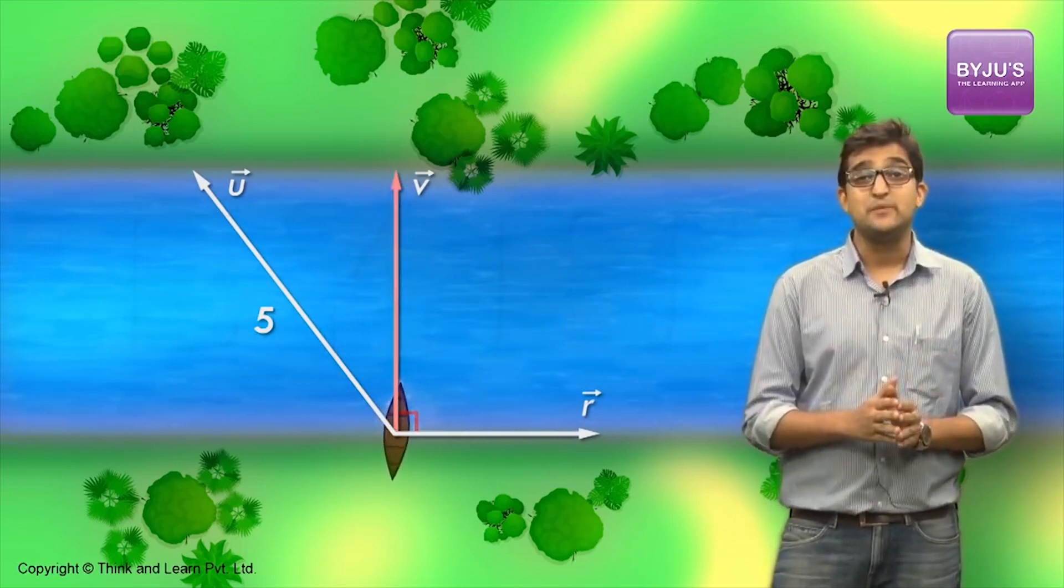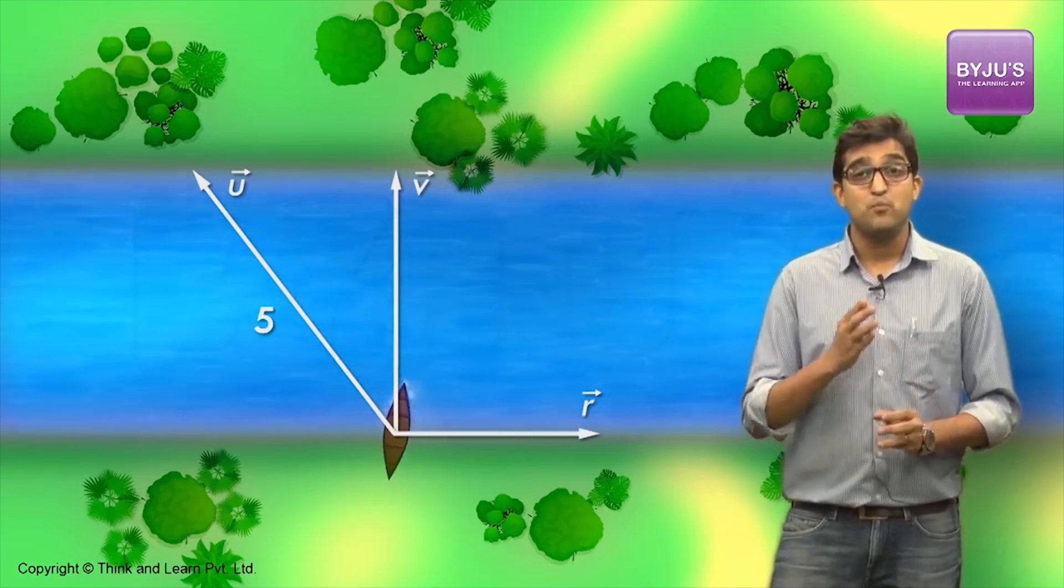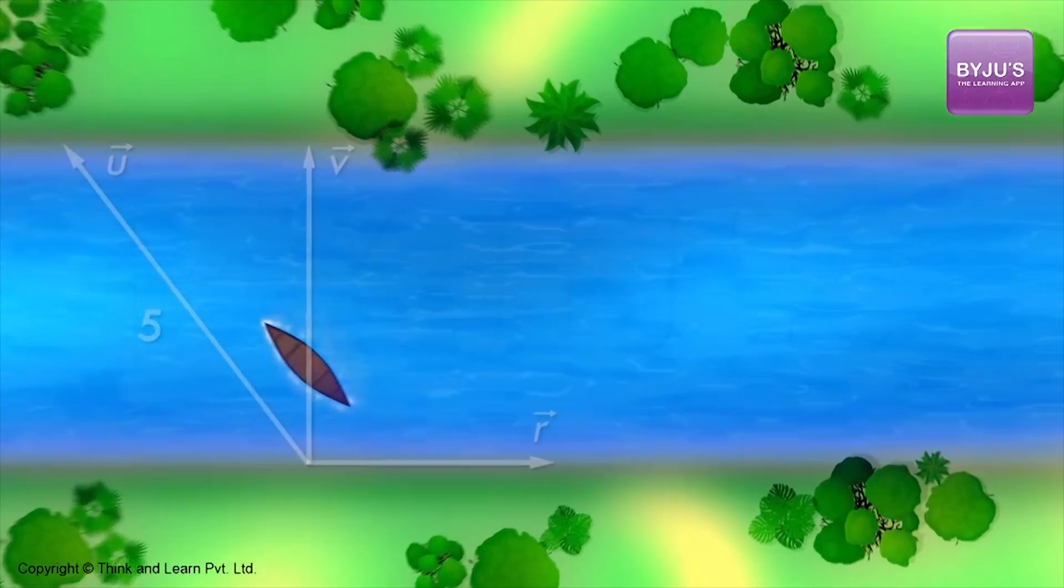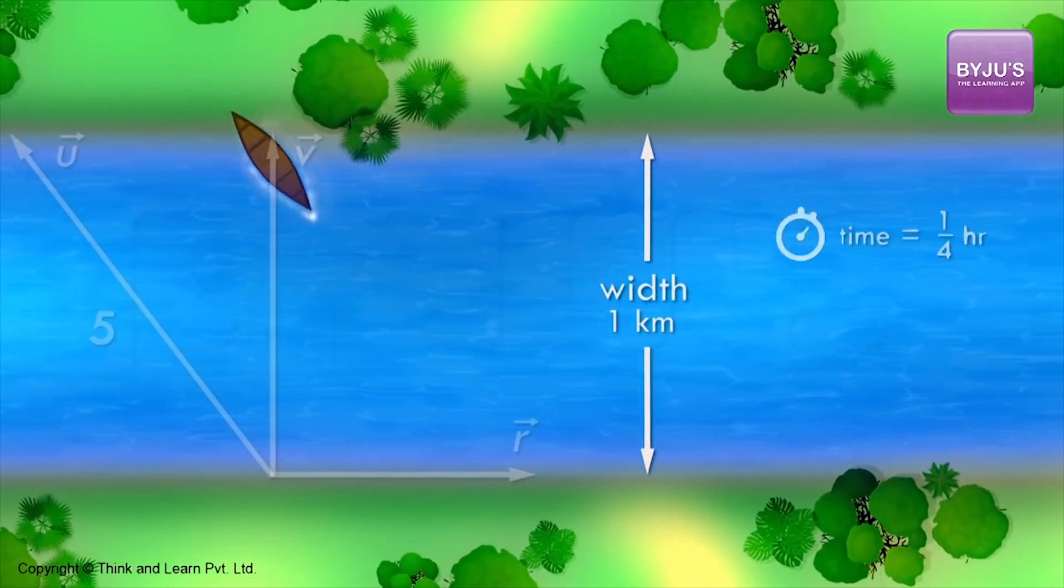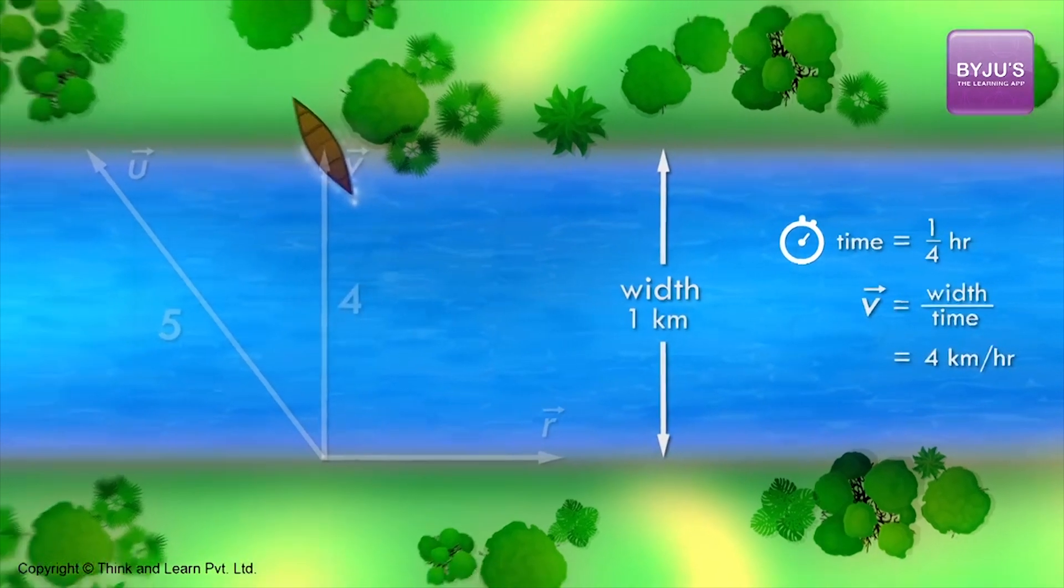To make the resultant speed perpendicular to the river flow, the boat should start moving in this direction. It is given that the boat finally crosses 1 km width in one-fourth of an hour. Hence, the resultant speed will be 4 km per hour.